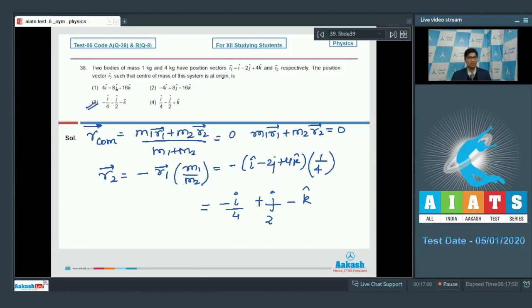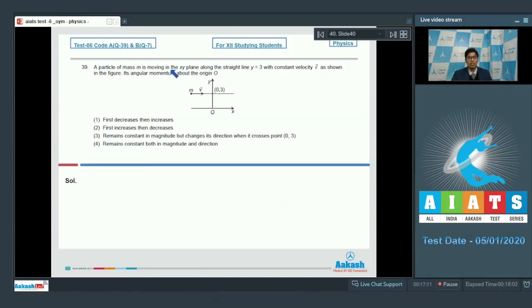Now dear students, let us proceed to the next question which is question number 39. Question number 39 says, a particle of mass m is moving in xy plane along the straight line y is equal to 3 with constant velocity v vector as shown in the figure. Its angular momentum about origin o is.